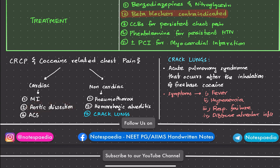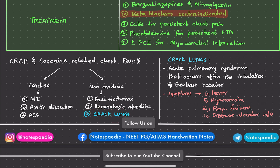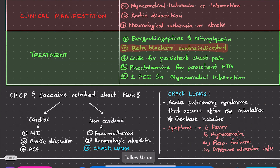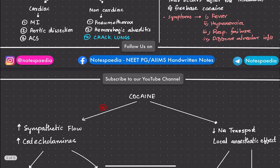The non-cardiac type of CRCP can include pneumothorax, hemorrhagic alveolitis, and crack lung. To rule out non-cardiac causes, we check the patient's oxygen saturation and perform a chest X-ray. Crack lung is an acute pulmonary syndrome that occurs after inhalation of cocaine. Its symptoms include fever, hypoxemia, and respiratory failure. If these symptoms are present, crack lung is the likely diagnosis.